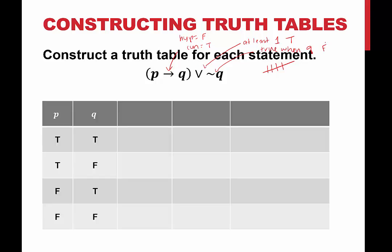Here are my five columns as predicted: p, q, then not q, then if p then q, and then the whole thing — if p then q, or not q. The negation of q will be false, true, false, true. For if p then q: true implying true — since the conclusion is true, the conditional is true. True implying false — that's our false for the conditional statement. If false — that's true. And if false — that's true. So the conditional will only be false when a true hypothesis leads to a false conclusion.